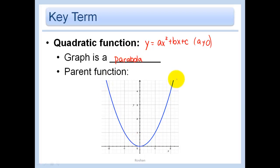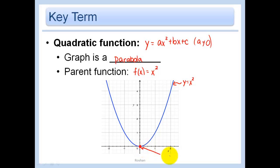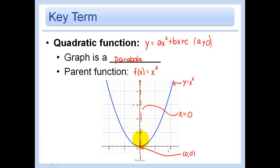This is a graph of a parabola. The parent function in its simplest form is y, or f of x, equals x squared. This is the graph of y equals x squared. The vertex, which in this case is the lowest point on the graph, is at (0, 0), and our axis of symmetry is just x equals 0. We call that our axis of symmetry.